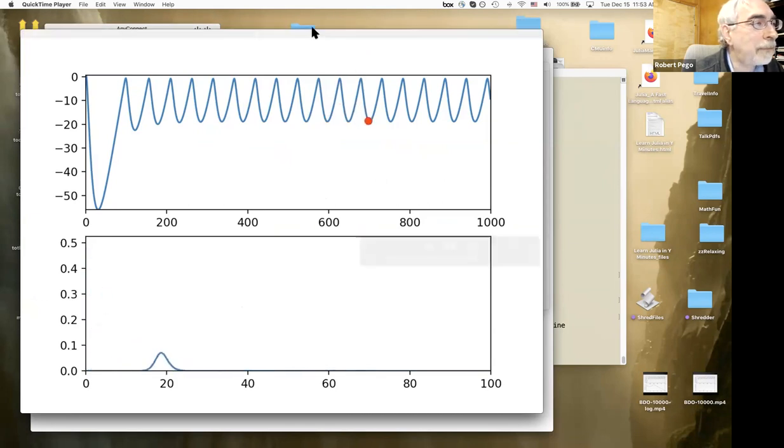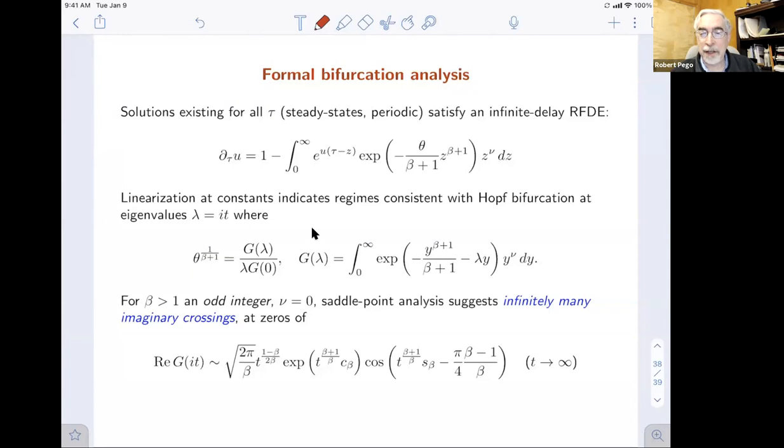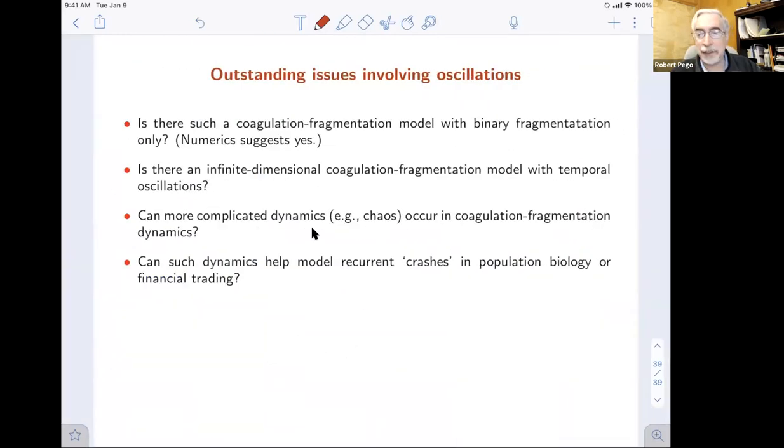I'll finish up mentioning some outstanding issues. We don't know if there's a coagulation fragmentation model with just purely binary fragmentation that has oscillations. We believe there is, and we don't know that yet. We haven't proved an infinite dimensional coagulation fragmentation model has oscillations. That remains. With these large number of bifurcations, it's plausible that more complicated dynamics can occur. We don't know that.